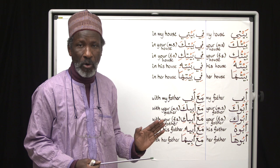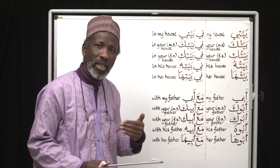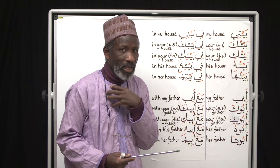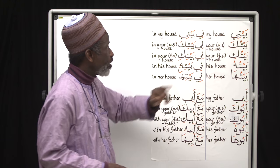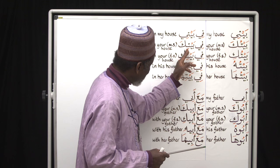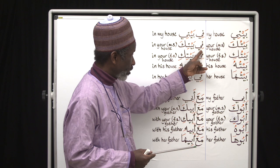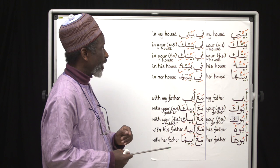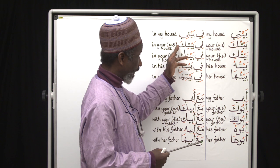Now when a preposition is involved — when we have a preposition before a possessive — let's see what happens. Fi baiti: baiti already ends with kasra to say 'my', so nothing changes. Fi baitika: the noun ending 'u' becomes 'i' in line with the rules. So fi is the preposition 'in', baiti ends with kasra, and ka is the person you're talking to — fi baitika means 'in your house', male singular.